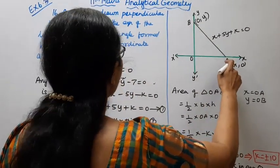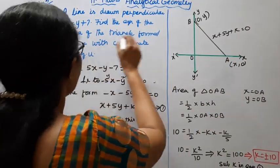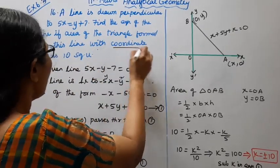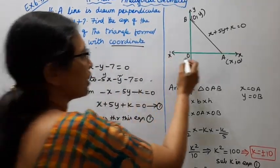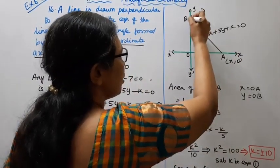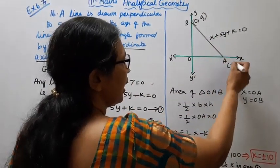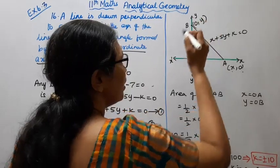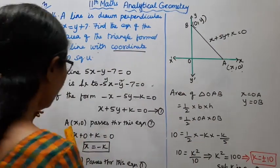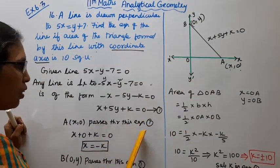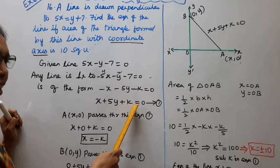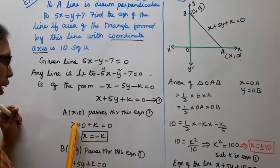The line meets the x-axis at point A and the y-axis at point B. A is at (x, 0). Substituting into x + 5y + k = 0: x + 0 + k = 0, so x = -k. Therefore A is (-k, 0).